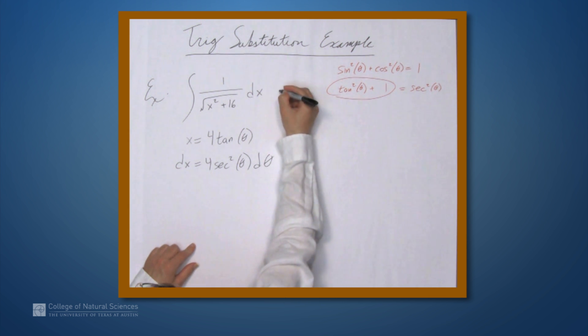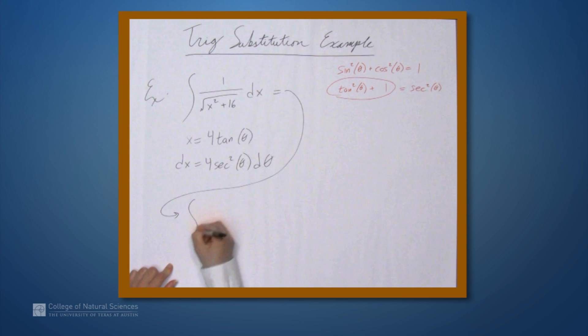So our original integral is now the integral of 1 over the square root of x squared, which is 4 tangent theta quantity squared. So that's 16 tangent squared theta plus 16.